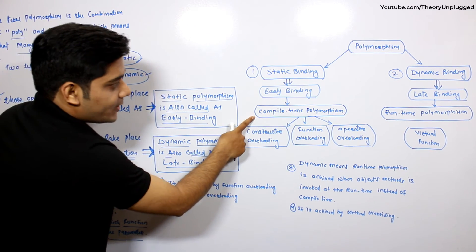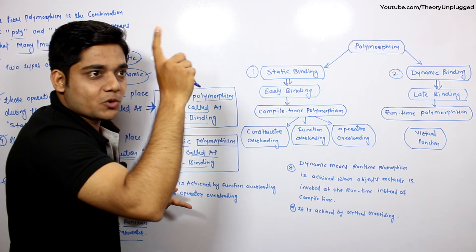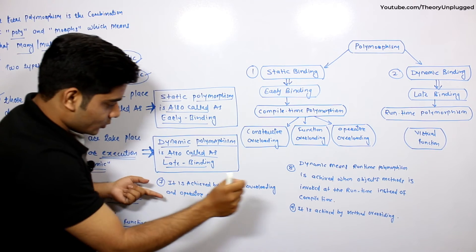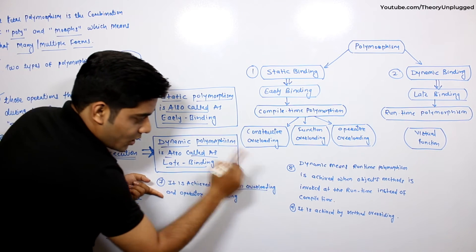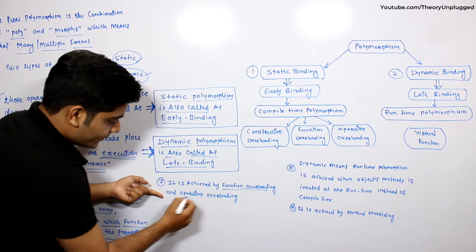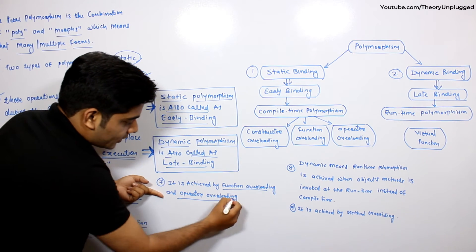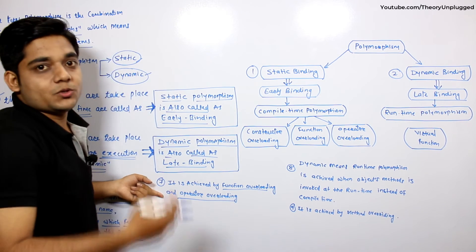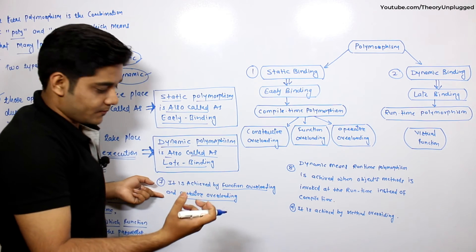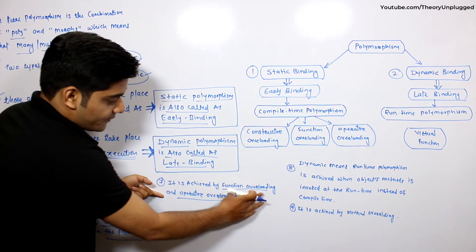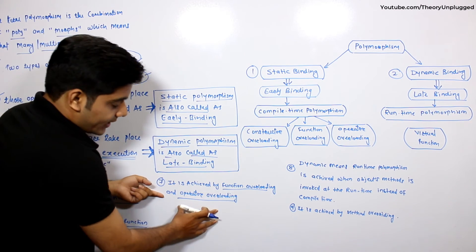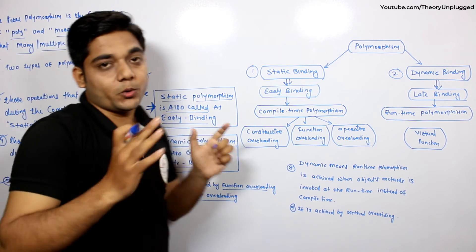If you want to achieve compile time polymorphism, you need to use function overloading and operator overloading. It is achieved by function overloading and operator overloading.